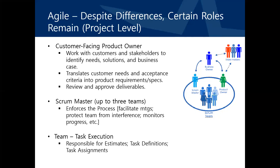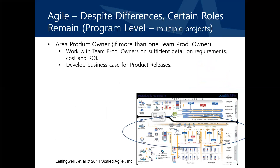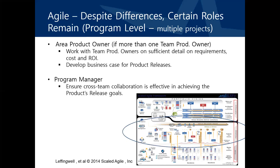The project team is solely focused on task execution, including task definitions, task assignments, and task schedule estimates. For small startups, some of these roles may be combined under the same individual. At the program level — meaning multiple projects integrated into a program — there may be an area product owner. This person works with multiple team product owners to ensure sufficient detail in requirements and program costing so that an ROI can be determined and justified. They also develop the business case for the various product releases. The program manager ensures that there is sufficient cross-team collaboration to achieve the product's release goals.